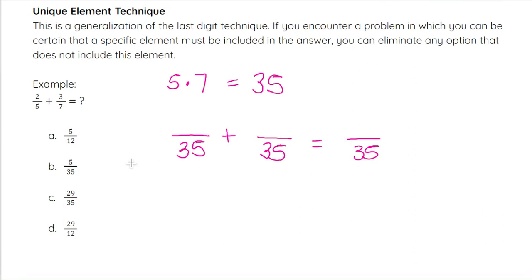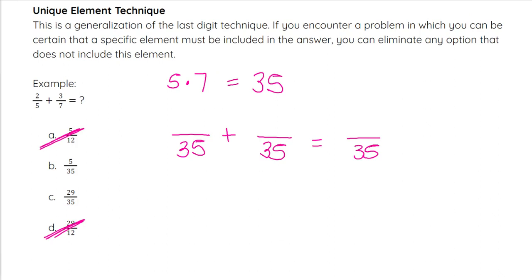With that being said, we know we can eliminate A and D because we have to have that common denominator of 35. That can help us eliminate answer choices that do not have 35 in the denominator. Once you have them eliminated, you could guess, you could actually solve it from there. You have a few options depending on the problem and your comfort level with it.